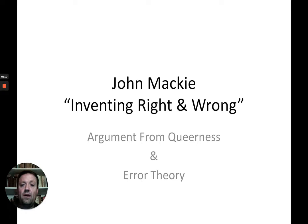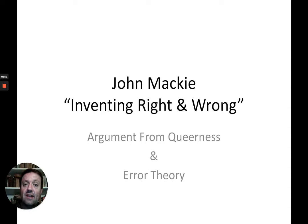Hello. In this lesson, we are going to look at two ideas from John Mackie's book, Inventing Right and Wrong. The first is the argument from queerness, and the second is his error theory, and the two are very closely related. In Inventing Right and Wrong, John Mackie is pushing a moral irrealist position — he is saying that all our moral judgments are essentially subjective. He is similar to A.J. Ayer and his theory of emotivism and Richard Hare's theory of prescriptivism. However, the way in which he argues for a moral irrealist conclusion is somewhat different, and that's what we're going to be looking at in this lesson.